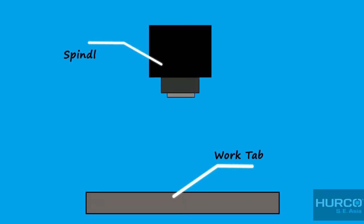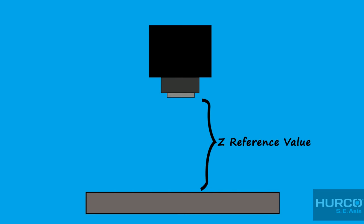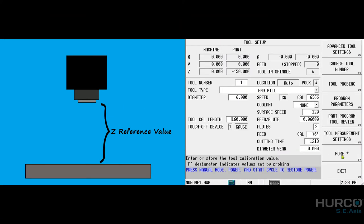This is the spindle and work table of your Herco Machining Center. And this is your machine's Z-reference value, which represents the distance from spindle nose and Z-axis home position to the tool touch-off location. For the machine to be able to calculate the absolute tool length, you need to measure this Z-reference and key into your Tool Measurement Setting parameter.